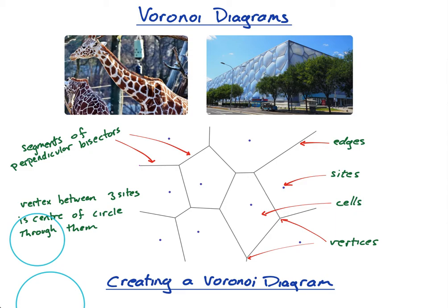Let me bring your attention to these two photos. I had too many examples to choose from for where Voronoi diagrams appear in real life. If you go to Wikipedia and type in Voronoi diagrams and look at the applications, you'll see that they appear all over the place in the real world. I've chosen to show you the giraffe, whose pattern is a Voronoi diagram, and the Water Cube — the aquatic centre in Beijing where they held the swimming in the 2008 Olympics. Its design represents bubbles, and when bubbles come together they form a Voronoi diagram.